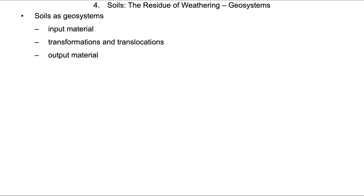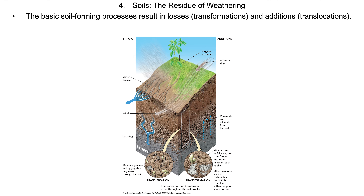Soils represent the remains of rock — the residue, the residuals of weathering. We can consider them to be geosystems in that they have many interacting components. These geosystems include input material, transformations and translocations, the addition and removal of material, and the output material. What goes into a soil geosystem is not the same as what comes out. Here we have an image of the basic soil-forming processes.